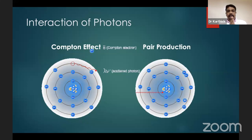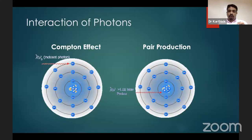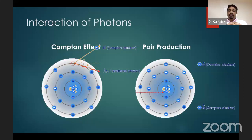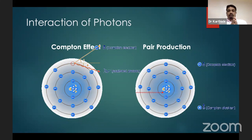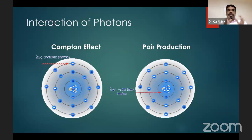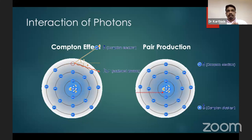Pair production is a typical example of how energy is converted to mass. If a photon has an energy of 1.02 MeV and interacts directly with the nucleus, it can be converted into two particles — an electron and a positron — each with an energy of 0.51 MeV. If the incident photon energy is more, the remaining energy is equally divided between the electron and positron. These are the four main interactions when a photon interacts with air or inside the body, and Compton effect predominates in the radiotherapy range.